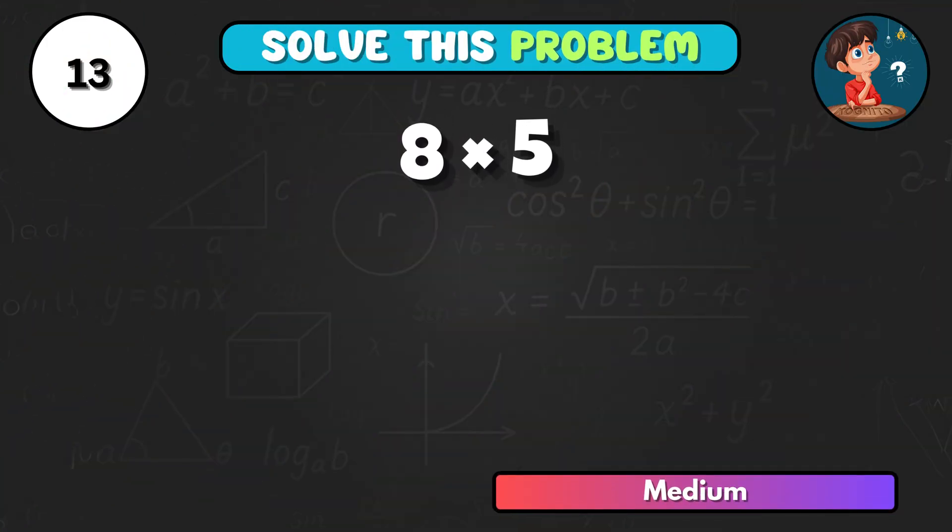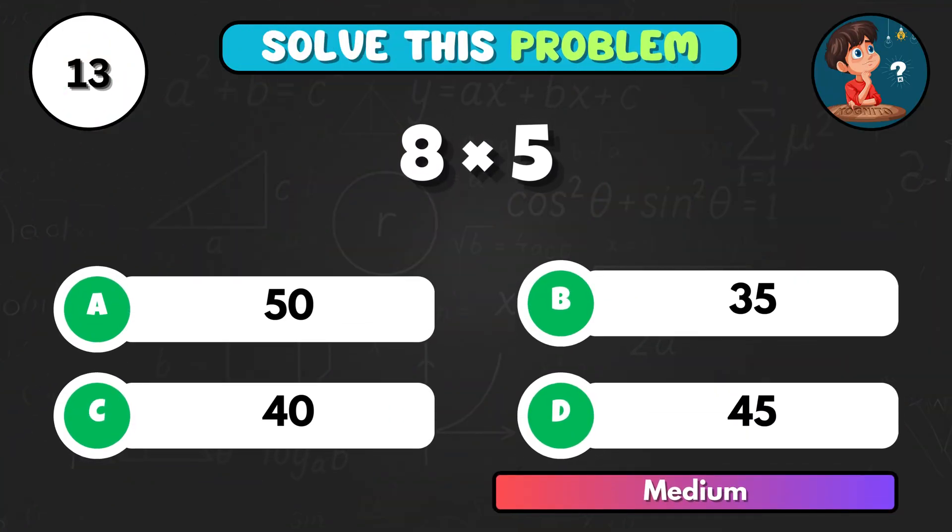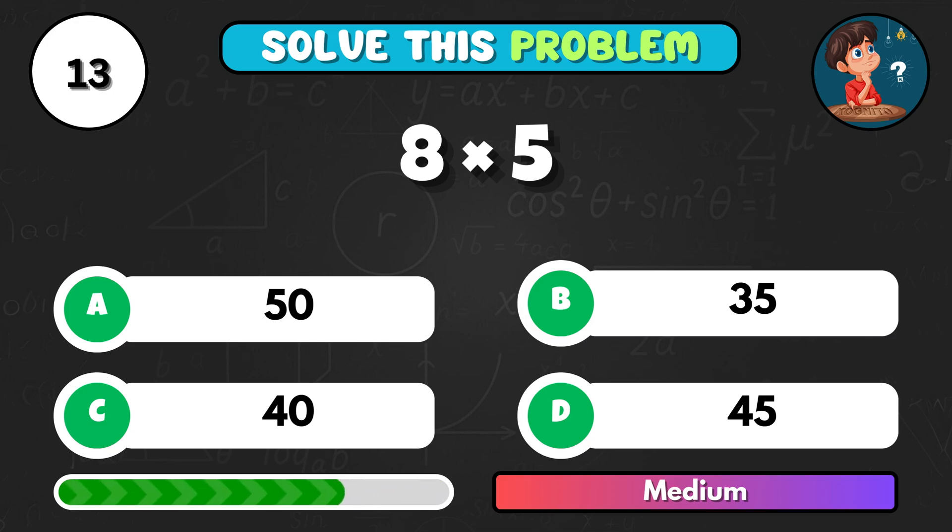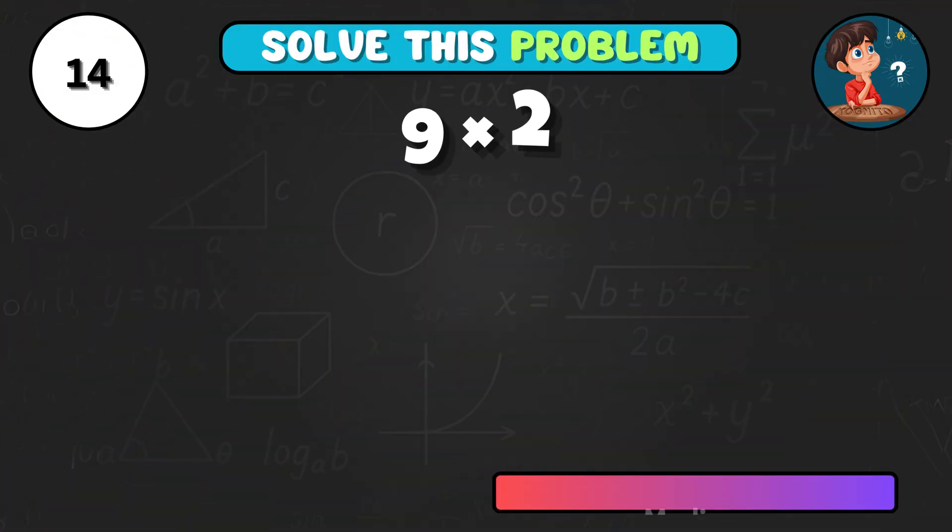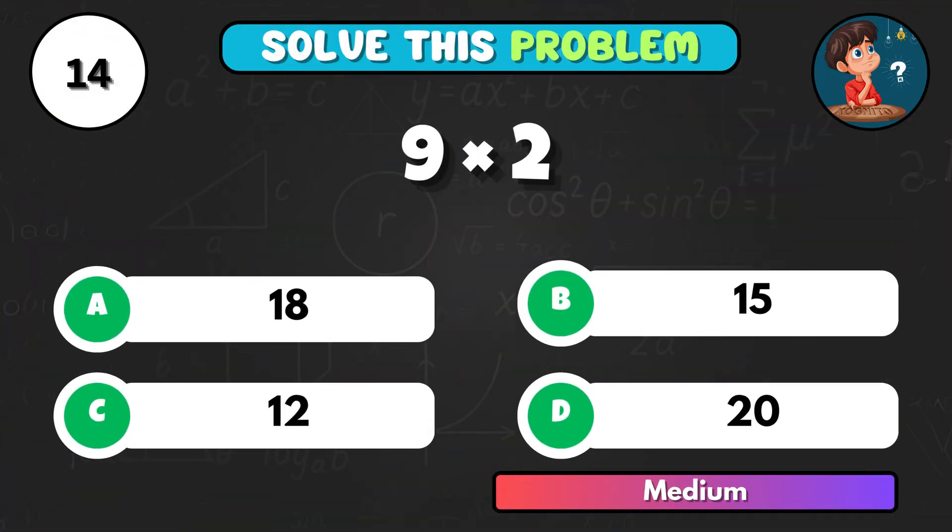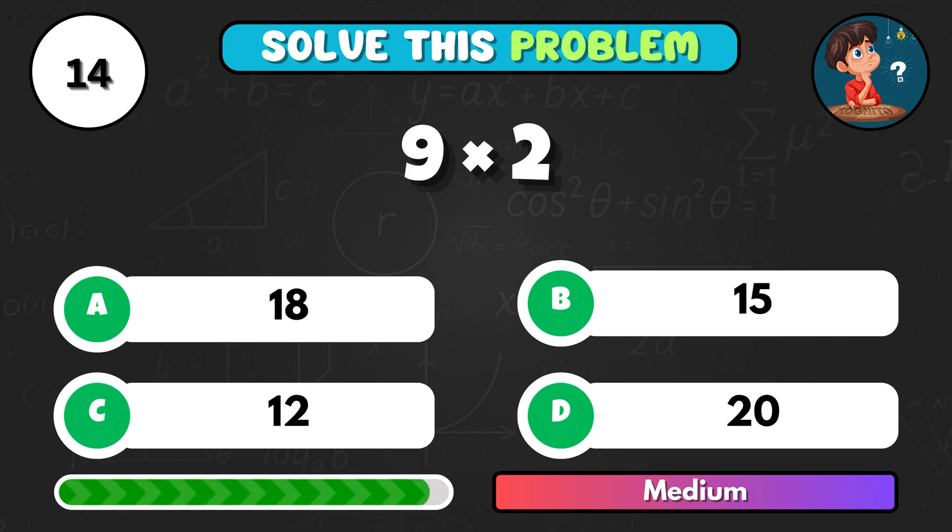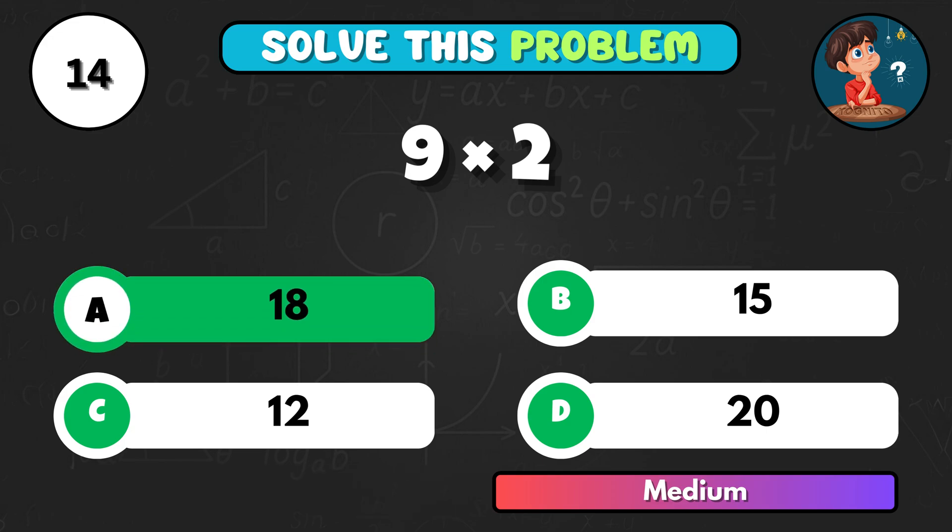Let's test you. 8 times 5. What's the answer? That's C, 40. Easy math check. 9 times 2 equals what? It equals A, 18.